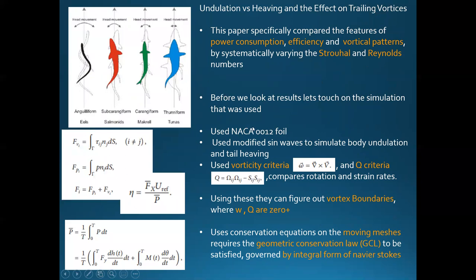This simulation used a NACA airfoil and modified sine waves to replicate these different swimming mechanisms. The equations used include viscous force and pressure force on the fish — that's the total drag force — plus efficiency and power calculations. To analyze the results they use vorticity criteria and Q-criteria, where Q compares rotation and strain rates. If Q is positive, rotation dominates strain, meaning you're inside a vortex, and where Q is zero but going positive marks the vortex boundary.